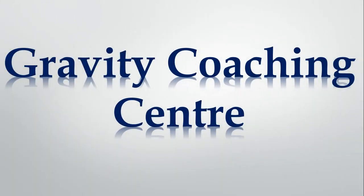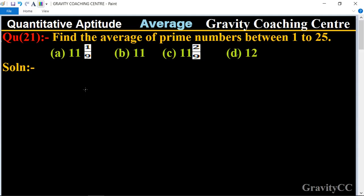Welcome to our channel Gravity Coaching Center. Quantitative Aptitude, chapter Average. Question number 21: Find the average of prime numbers between 1 to 25.